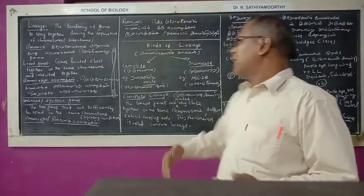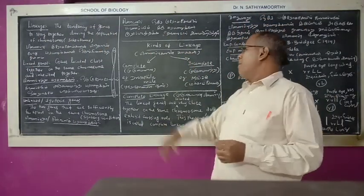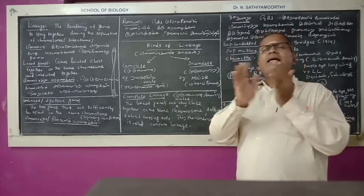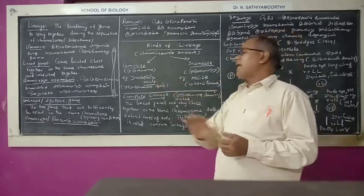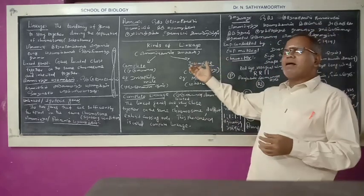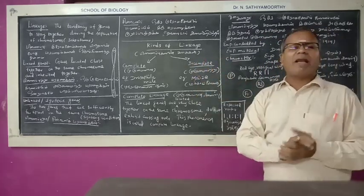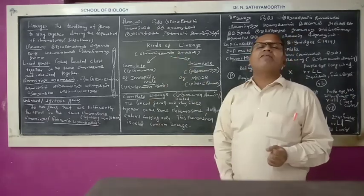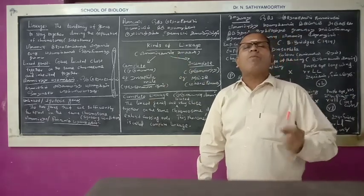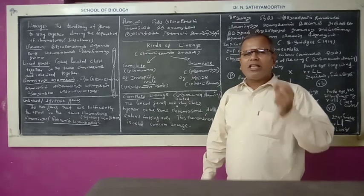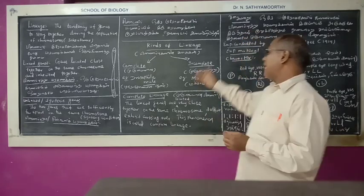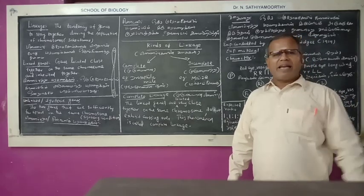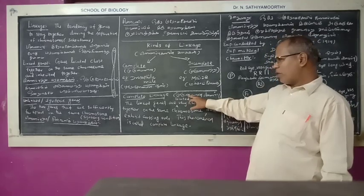Now we come to the kinds of linkage. One is complete linkage — murumayana pinaikpul. Another is incomplete linkage — murumayatra pinaikpul. Complete linkage is reported in Drosophila melanogaster, and incomplete linkage is reported in maize.